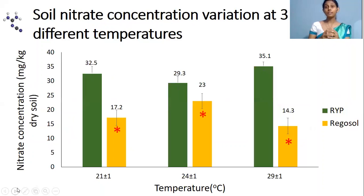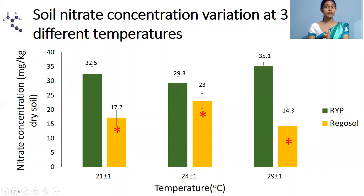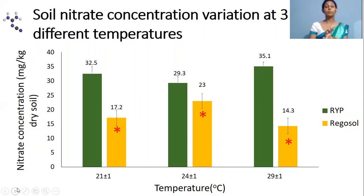Now let's look at the results section. You can observe the graph representing the soil nitrate concentration variation under three different temperatures. Here, Regosol soil is always having lower nitrate concentration compared to RYP soil.